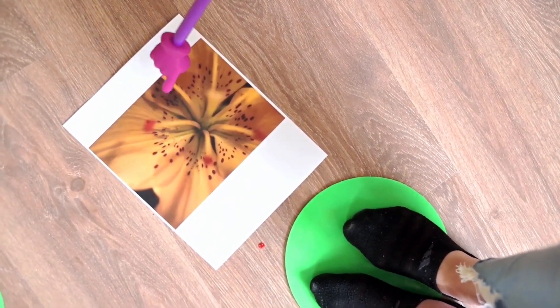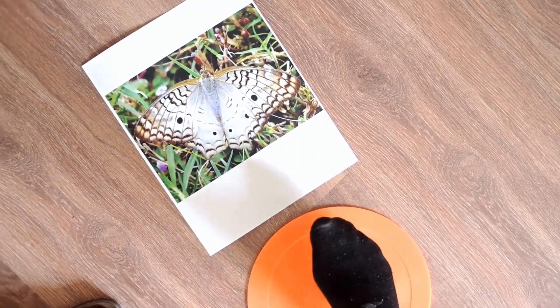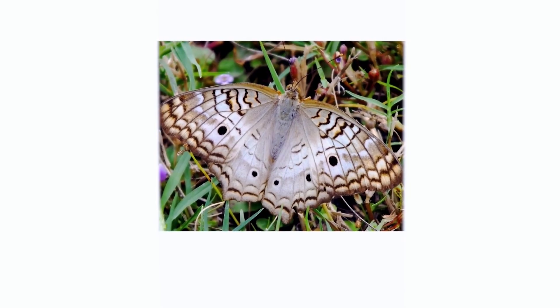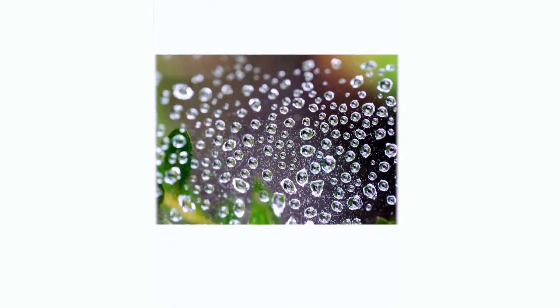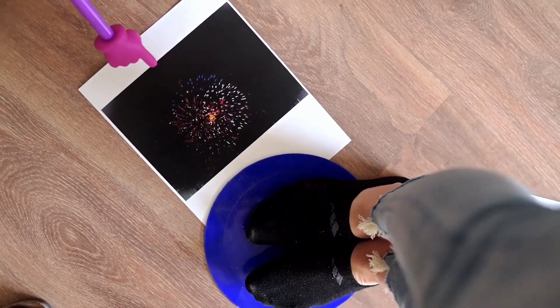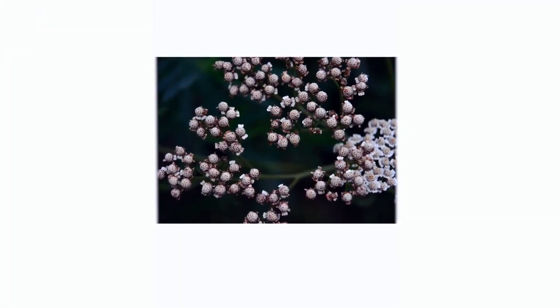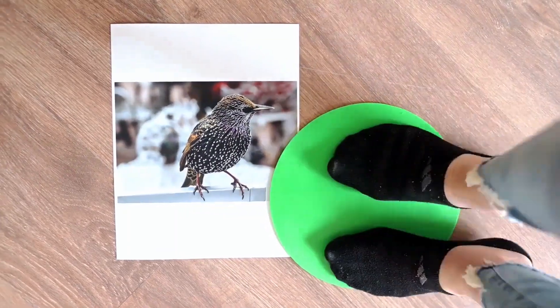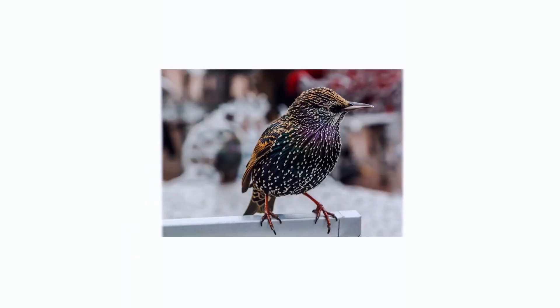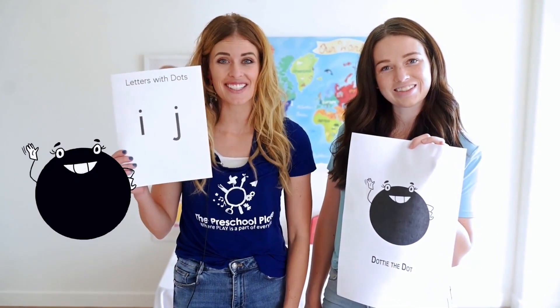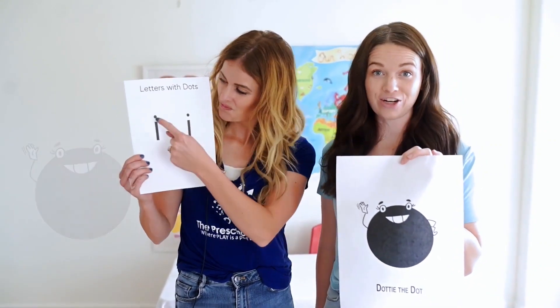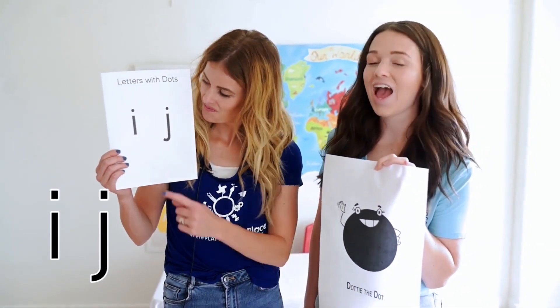We are going to hop on the dots to see if we can find other things in nature that look like dots. Look at this flower — there are dots on the inside of the flower. This butterfly has dots on it. Look at the raindrops — those are also dots. Look at the fireworks — fireworks are also in the shape of a dot. These flowers are just starting to blossom — they also look like dots. Look at this pretty bird — it has dots all over it. I had so much fun learning with Dotty the Dot today. Remember, there are only two letters that have a dot on them: lowercase I and lowercase J. We'll see you next time on My Preschool Place. Bye!